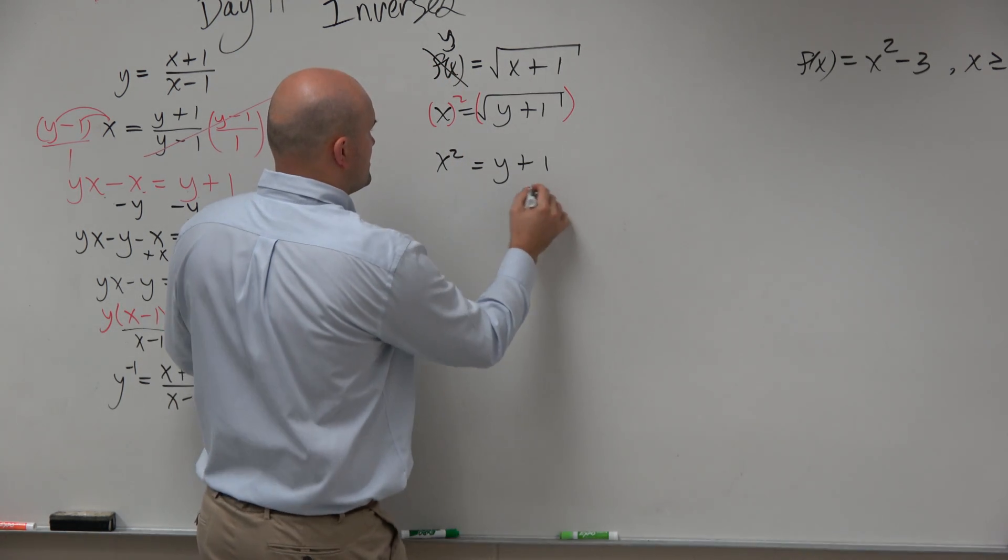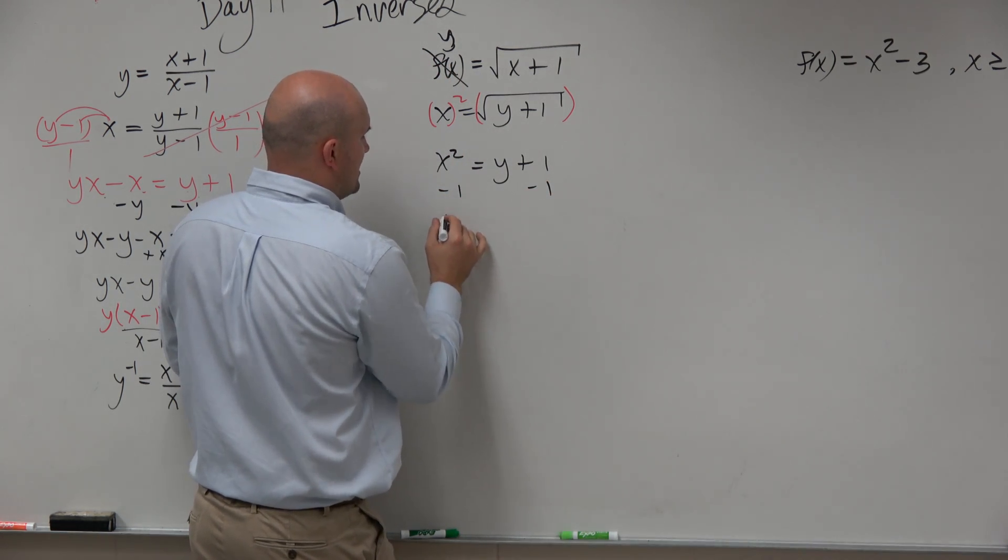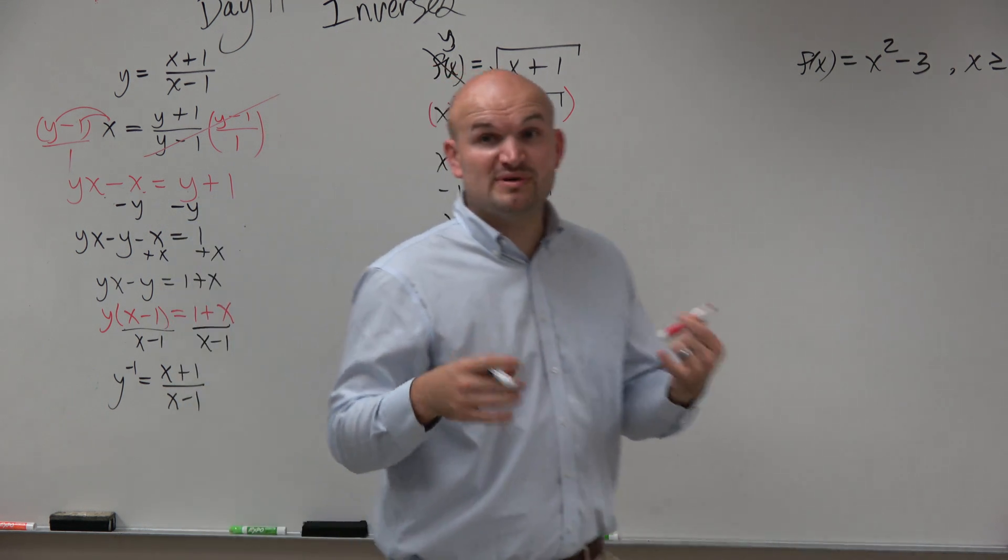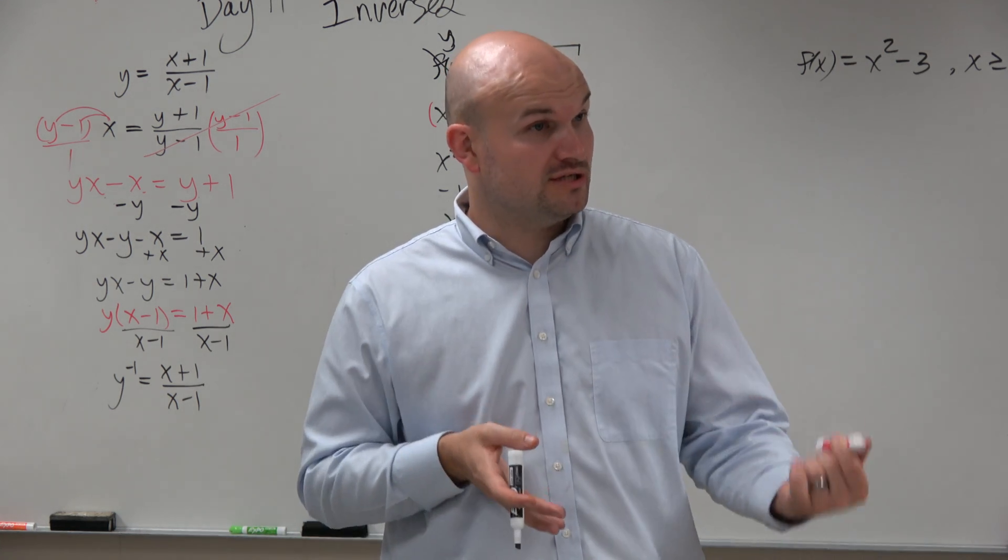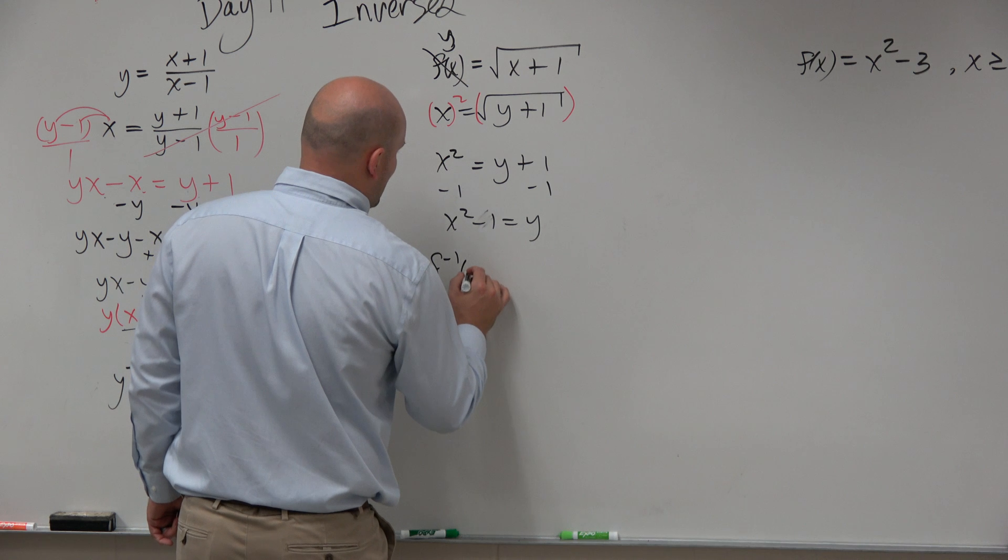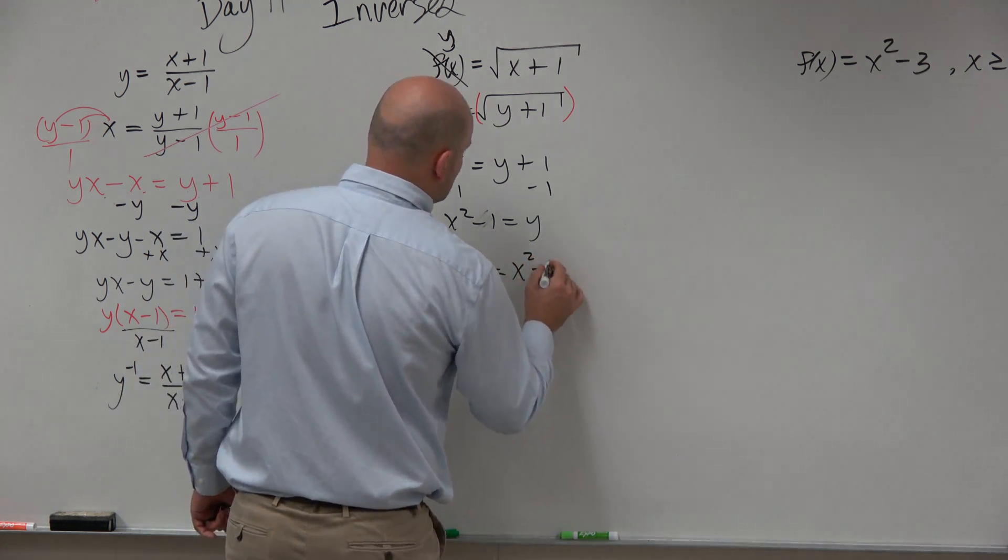We're going to subtract the 1 on both sides, and we get x squared minus 1 equals y. Now, remember, we started with a function, so we need to use function notation. So I'm going to rewrite this as f inverse of x equals x squared minus 1.